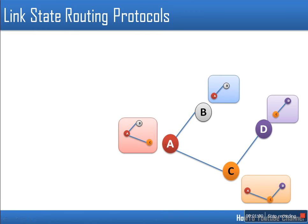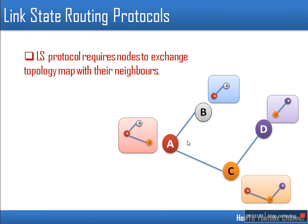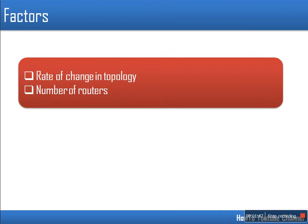Another one is link state routing protocol. In this routing protocol, every node actually has the entire topological structure. Initially, a node will have the idea that B and C are connected to it. Similarly, B will have the idea of its own neighbors. All nodes share this information with their neighbors and every node completes its topology for the network. Once this topology is completed, whenever a node wants to send data to another node, it runs a shortest path algorithm on its topology to find the shortest path. In this protocol also there will be exchange of information.